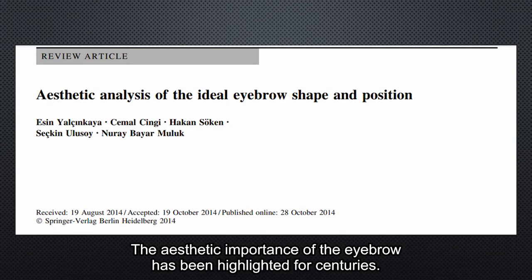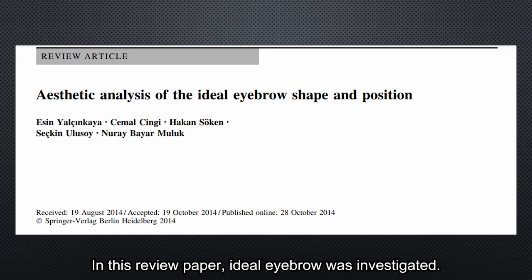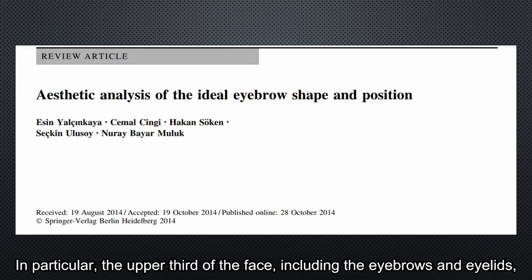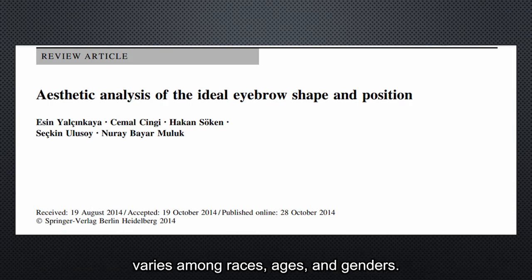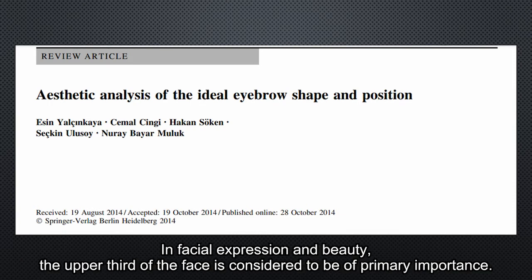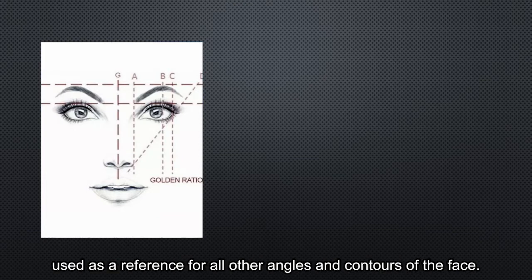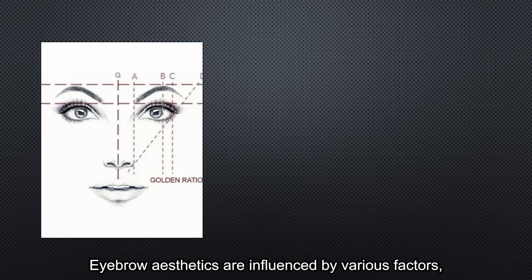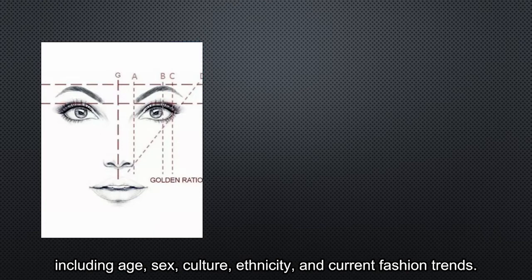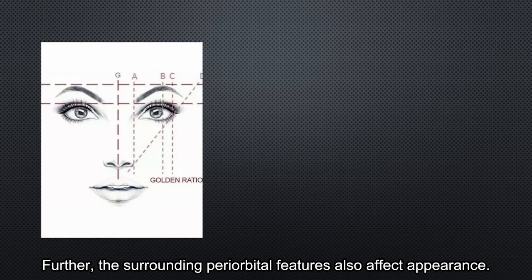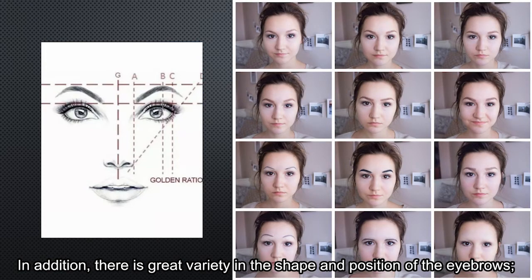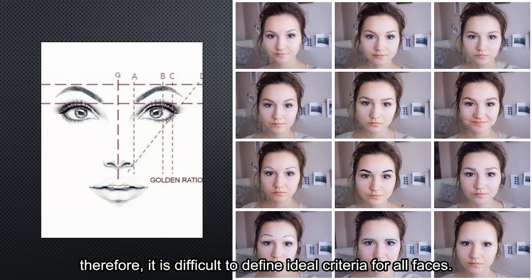The aesthetic importance of the eyebrow has been highlighted for centuries. In this review paper, ideal eyebrows were investigated. The upper part of the face, including the eyebrows and eyelids, varies among races, ages, and genders. The brow is known as the master unit of the face, used as a reference for all other angles. Eyebrow aesthetics are influenced by various factors including age, sex, culture, ethnicity, and current fashion. The surrounding periorbital features also affect appearance, and there is broad variety in the shape and position of the eyebrows. Therefore, it is difficult to define ideal criteria for all faces.